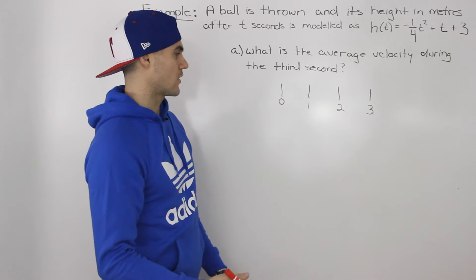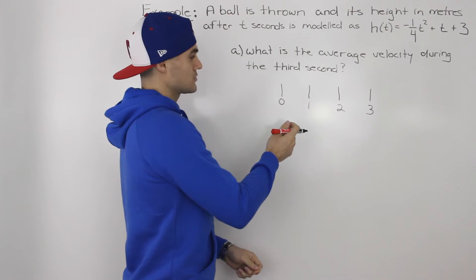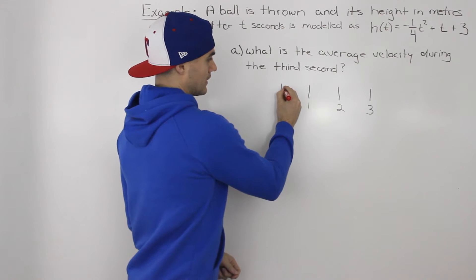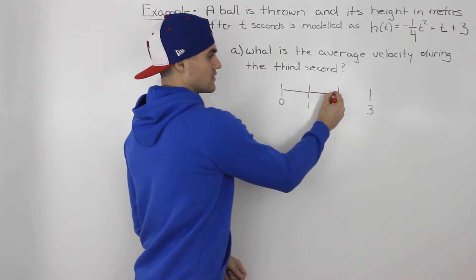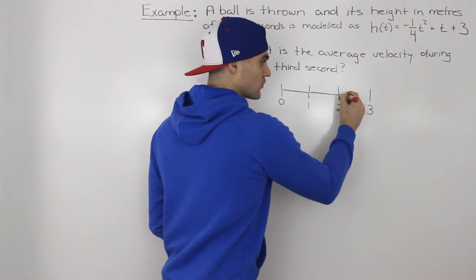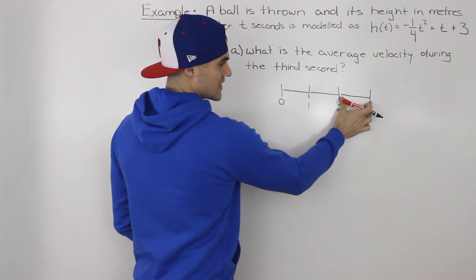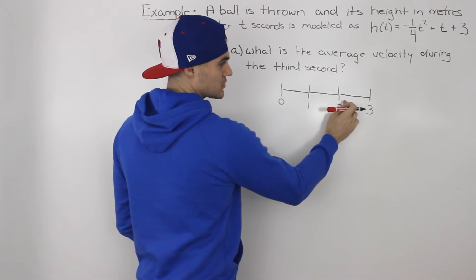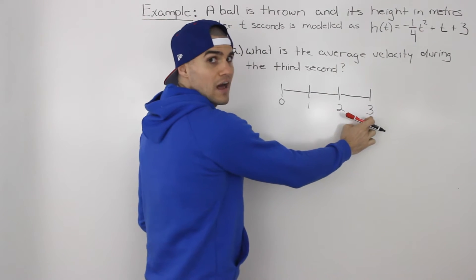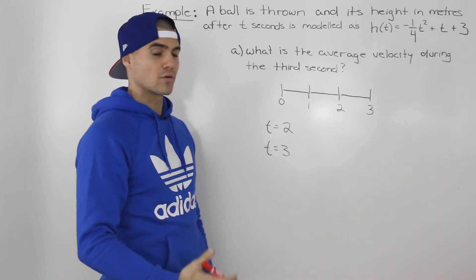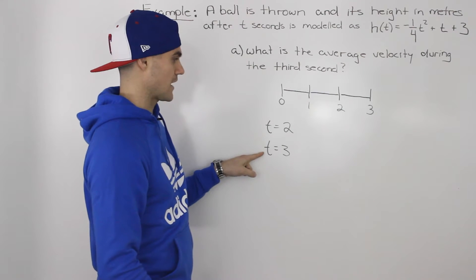Here's what I mean by that in a diagram. A ball is thrown at zero seconds, then it travels for one second, then the second second, then the third second. So the third second represents this period of time between two points at a t value of two and a t value of three. So we're finding the average velocity between t values two and three.